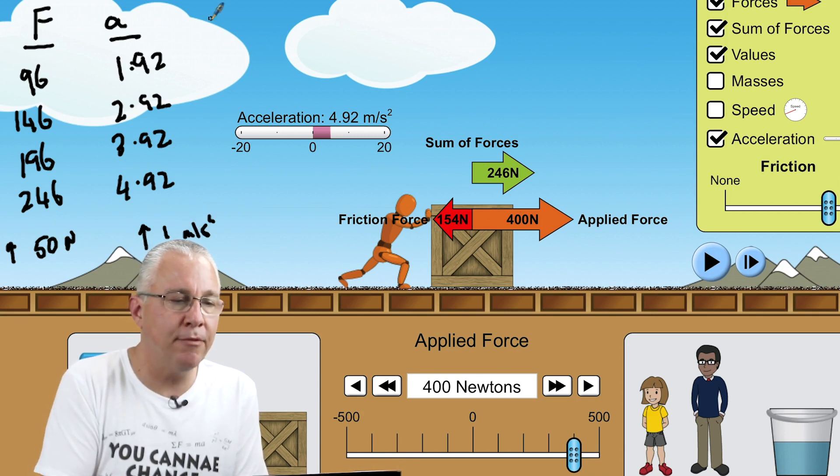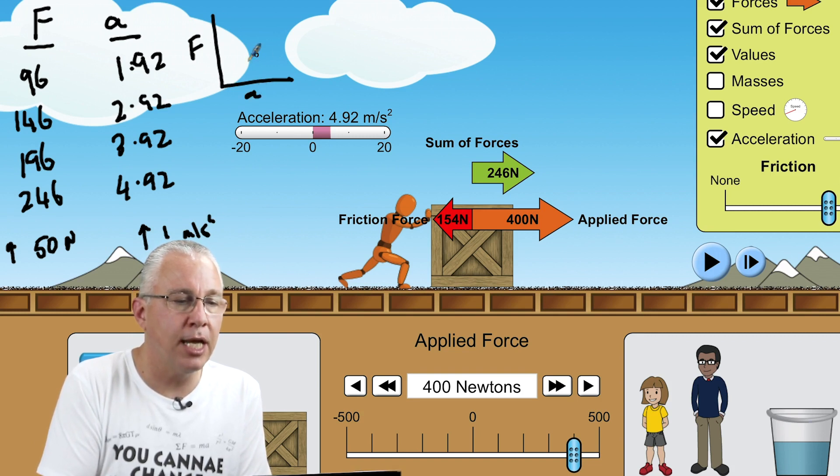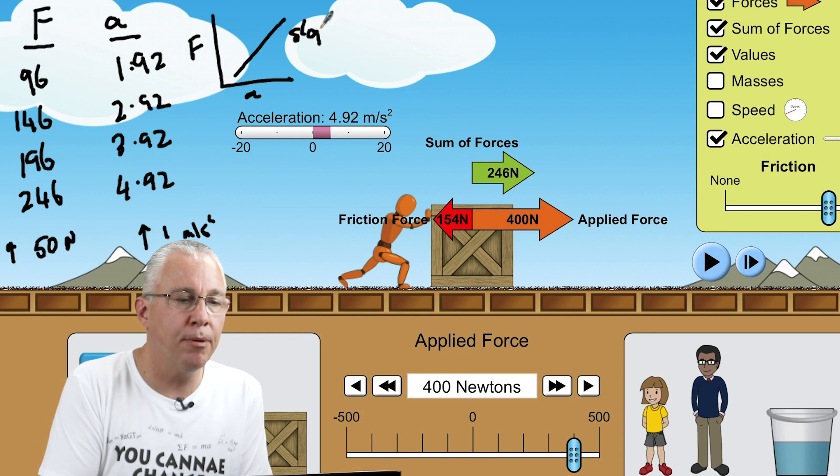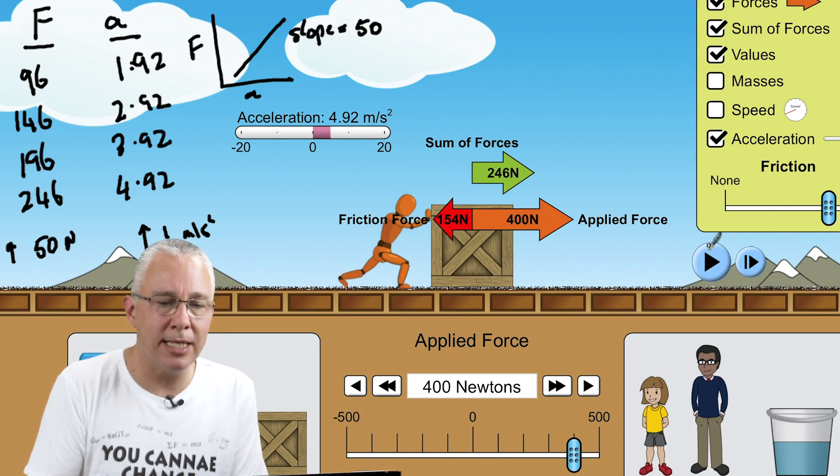So that means if we were to graph this, that's force and acceleration, we'd get a lovely straight line whose slope is equal to, in this case, 50 over 1, which is equal to 50. Now why is that significant?